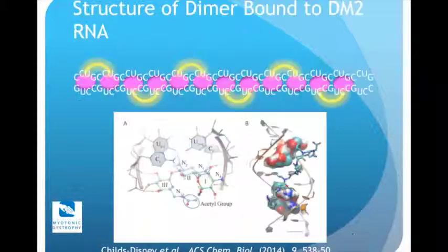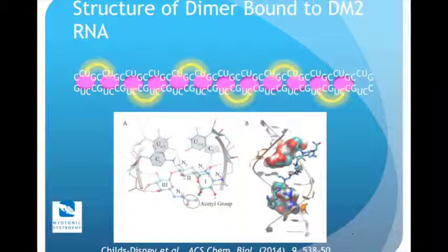The next slide shows a structure of our compound — a dimeric compound with two purple or violet RNA-binding modules bound to the DM2 repeat. There are a lot of interactions between our drugs and the RNA loops. This teaches us lessons about how to get compounds that bind to these RNAs with extremely high affinity and selectivity, which is ultimately what we need for a therapeutic for DM2 — the compound must be specific only for the genetic defects to minimize long-term side effects.